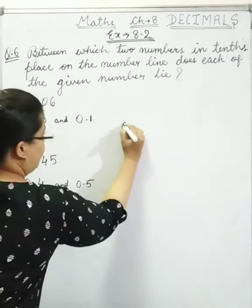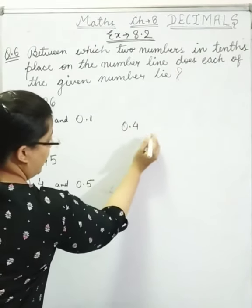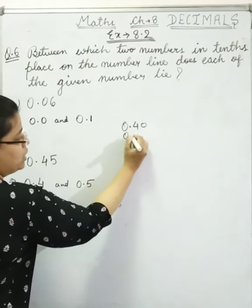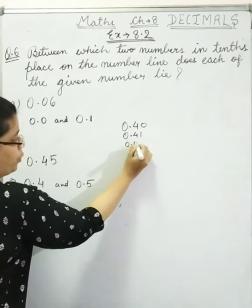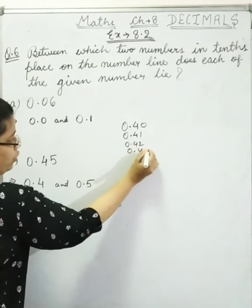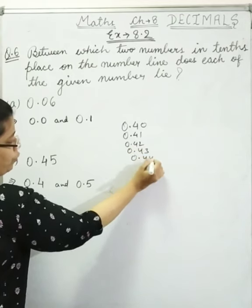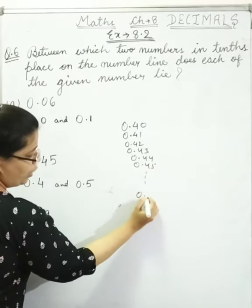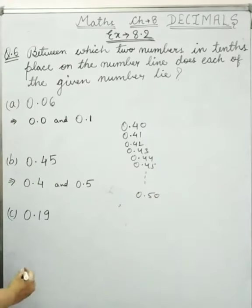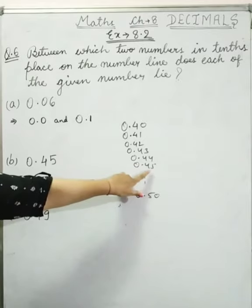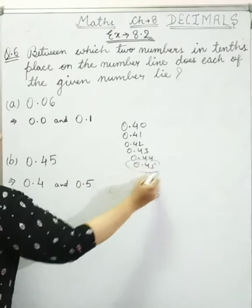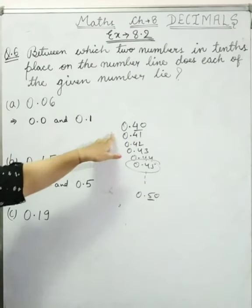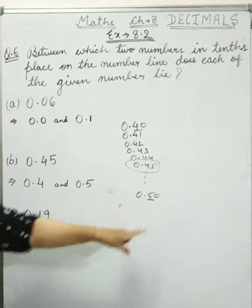This is 0.4, written as 0.40. Then we have 0.41, 0.42, 0.43, 0.44, 0.45, and this is 0.50. So 0.45 lies between 0.40 and 0.50, meaning 0.4 and 0.5.